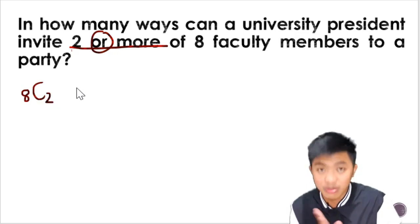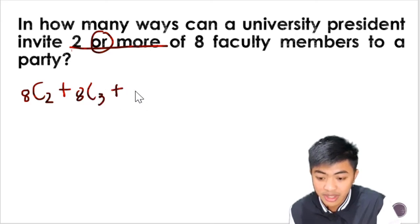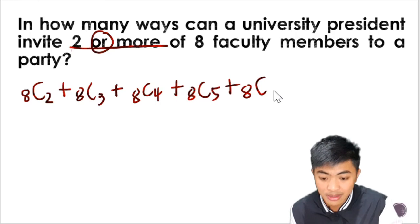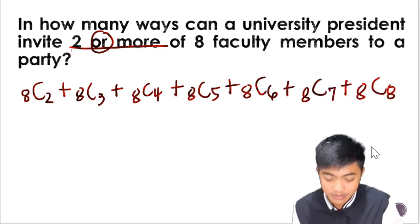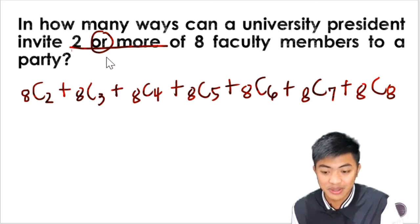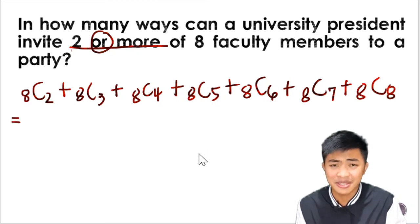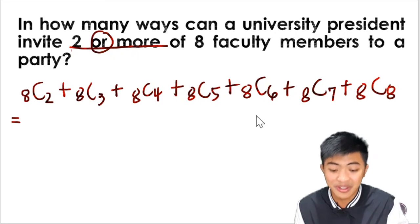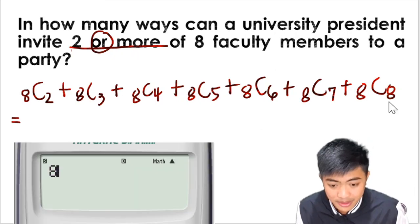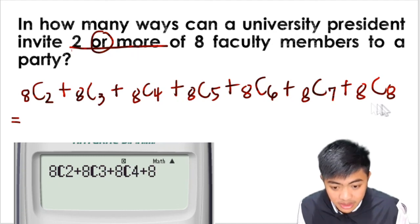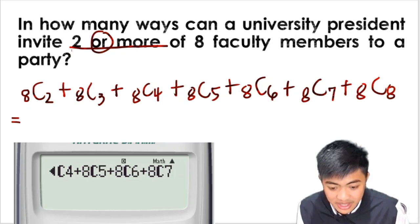So from 8, you can invite 2. Since it's 2 or more, you can invite 3, 4, 5, and so on, up to inviting all of them. That's the solution. Remember if you have OR, you have to add something and analyze how many to invite. We can input this directly in the calculator because there are many. We don't have time to input these one by one in the formula. I'm going to show you my input: 8 taken 2 plus 8 taken 3 plus 8 taken 4 plus 8 taken 5 plus 8 taken 6 plus 8 taken 7 plus 8 taken 8.